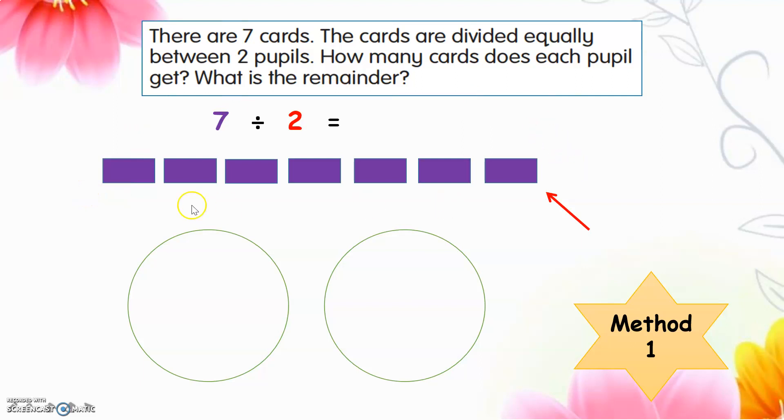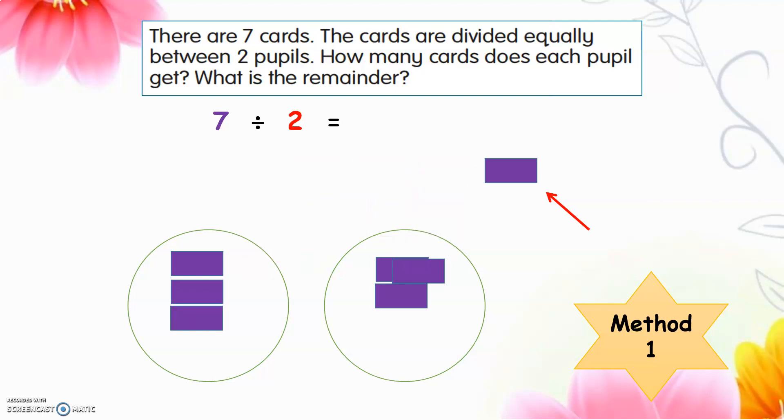Here there are 7 cards and 2 pupils, 2 groups. 1, 2, 3, 4, 5, 6. And there is only 1 left. Can we give to the first pupil? Cannot. Because then that will be not equal, right? So the 1 will be remainder baki. Can you understand? Because 7 can't divide by 2 without remainder. There is a remainder.